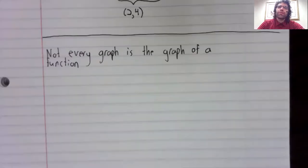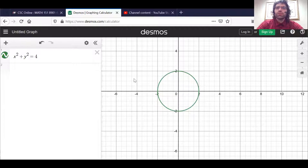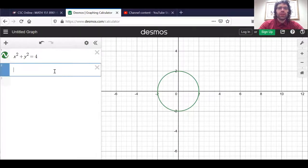Every function can be graphed, but not every graph is the graph of a function. Here's the graph of a circle, x² + y² = 4. And this graph is not the graph of a function. How do I know that?